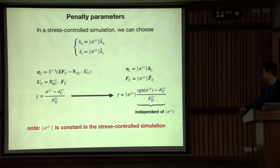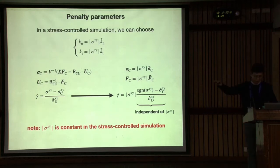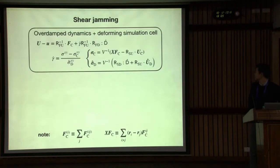So, almost done. But what is shear jamming in this context? Displacement is governed by this linear algebra. Velocity is determined by contact force and the deformation. Gamma dot is determined this way simultaneously. This is a governing equation to update the position of particles.